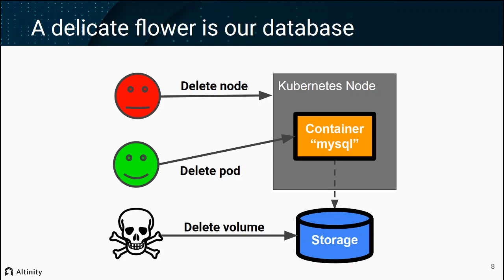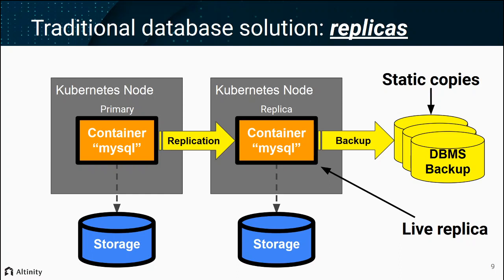There are a number of bad things that could possibly happen. You could delete the pod — that's usually not a big deal when you install from Helm. But if you delete the node, you might lose the storage, because the storage could be allocated locally. And if you delete the persistent volume, for example if you allocate block storage, your data is gone — there's no replacement. This is kind of the same situation as having a laptop and dropping it or having the storage die.